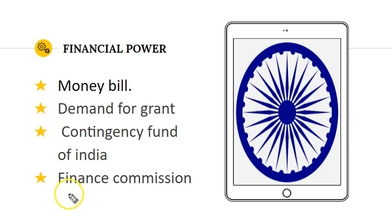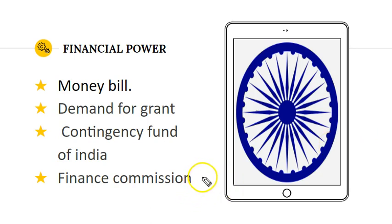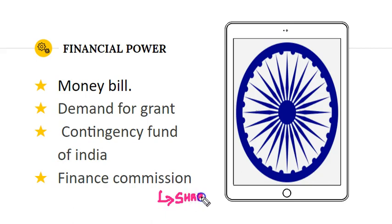As mentioned under Executive Powers, the President appoints the Chief and members of the Finance Commission every five years, after which he renews the Finance Commission. The Finance Commission is responsible for advising the government regarding the sharing of tax revenues between the Centre and States.